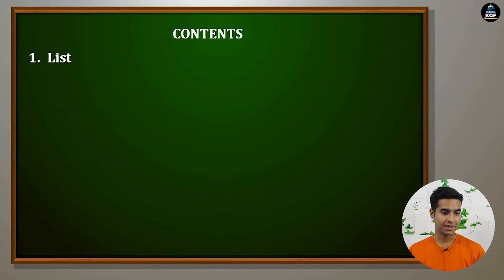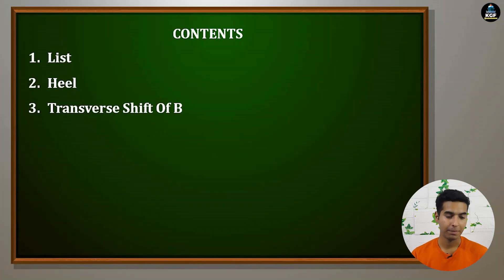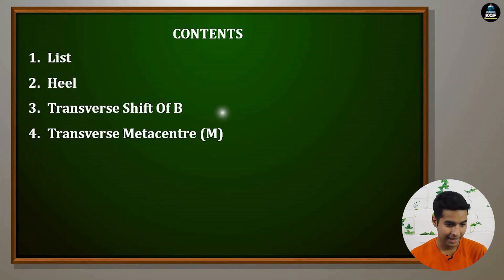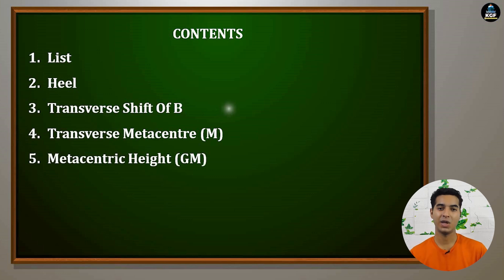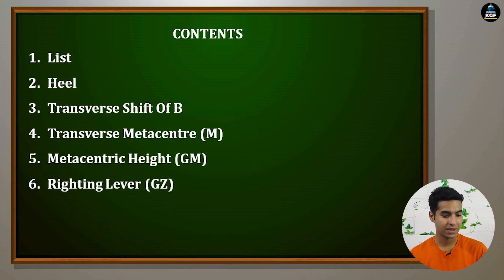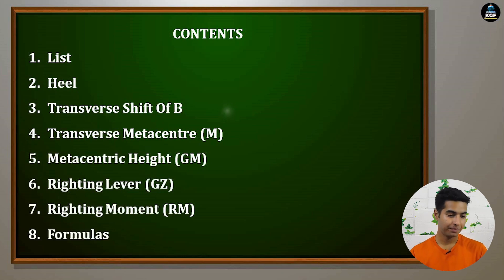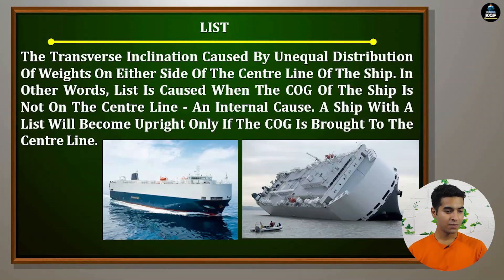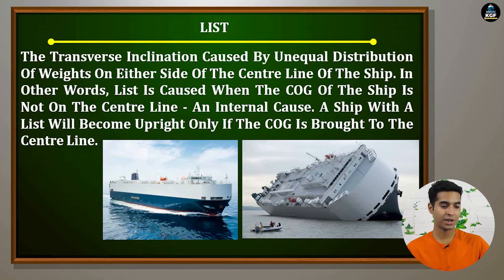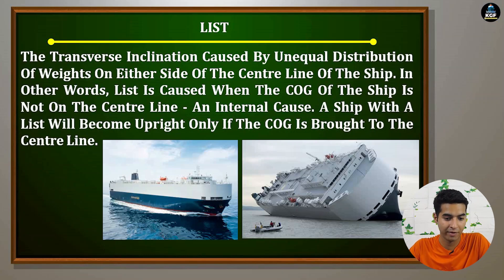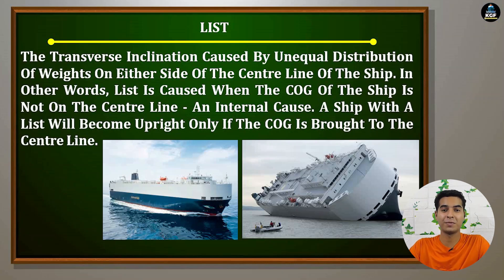First we will read the contents — what we have to study. The topics are: list and heel; transverse shift of B, where B stands for buoyancy; transverse metacenter, that is M; metacentric height, that is GM; righting lever, that is GZ; righting moment, that is RM; and some formulas. List will be the transverse inclination caused by unequal distribution of weights on either side of the centerline of the ship. In other words, list is caused when the center of gravity of the ship is not on the centerline — an internal cause. List is always caused by an internal cause, that is unequal distribution of cargo.